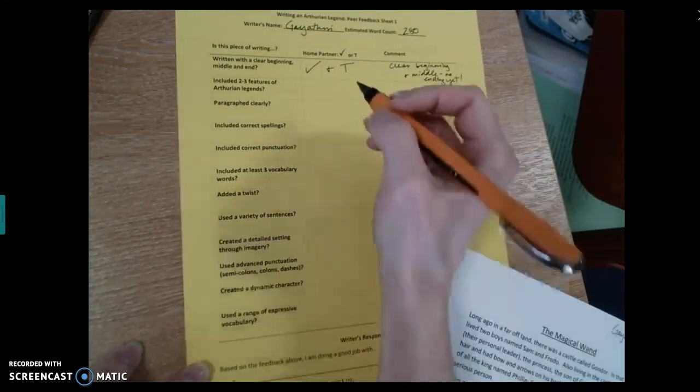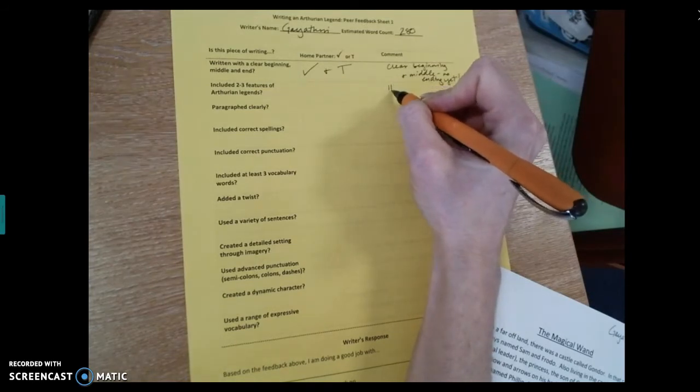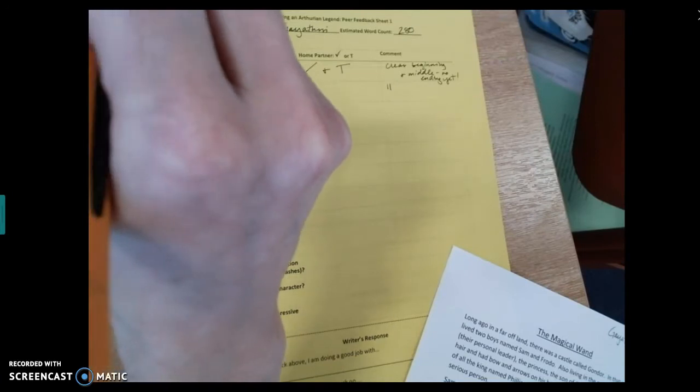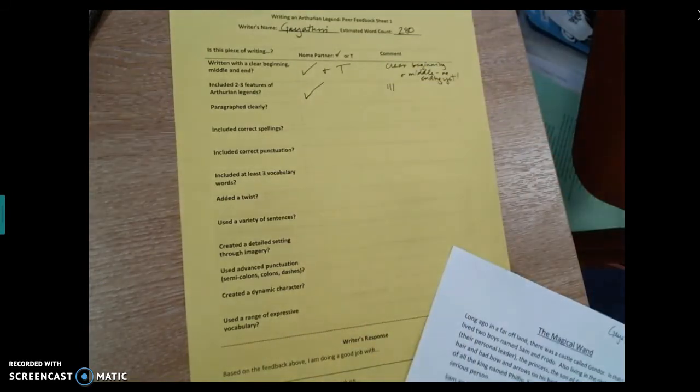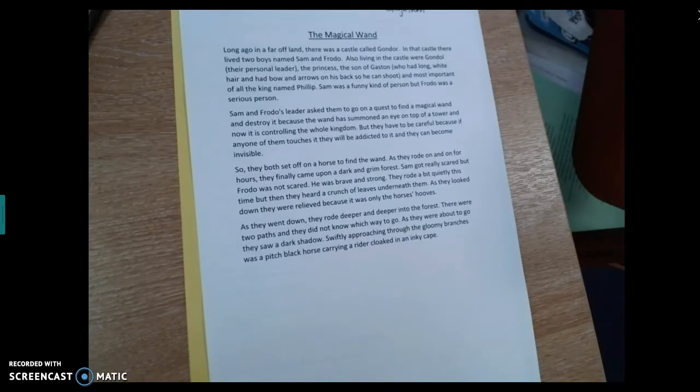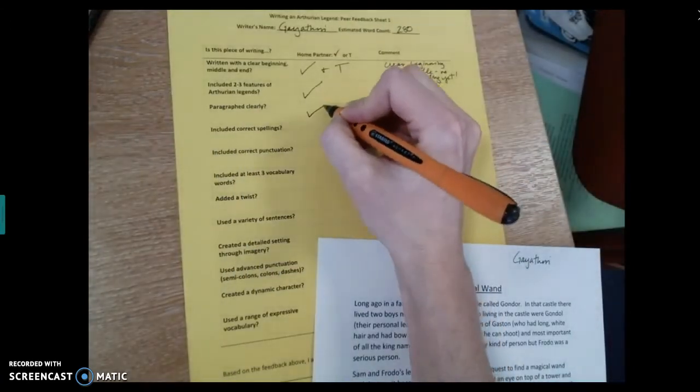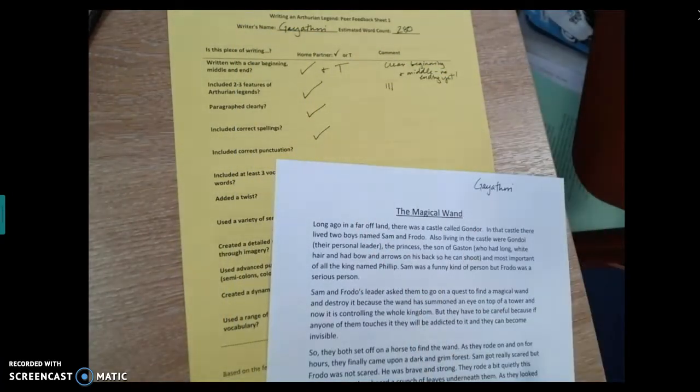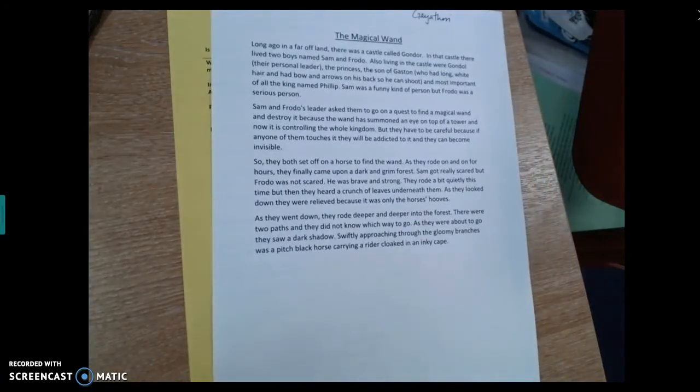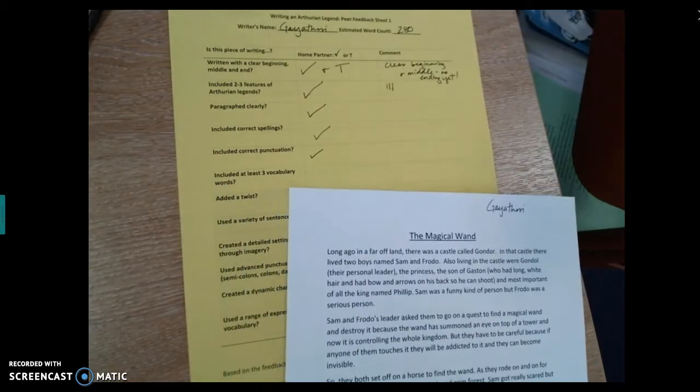Okay, does she have two to three features of Arthurian legends? I think she does. She's got a wand, so that's one. She also has a quest, that's two. And she kind of has a bit of like a magic kind of idea, this idea of like a curse. So that's three. So I'm going to say yes, she meets that one. Is it paragraph clearly? I can see right now that Gayathri has four really nice paragraphs. So they're really nicely spaced and it's easy to read. So I'm going to say yes, she's paragraph clearly. And her spellings are also mostly correct. So I didn't notice any big ones there. Her punctuation is pretty solid. She's got lots of good full stops. She's got commas and apostrophes. So I'm going to give her a tick for that because it's correct. Later on, we might have to think about whether or not she can vary her punctuation a little bit more.